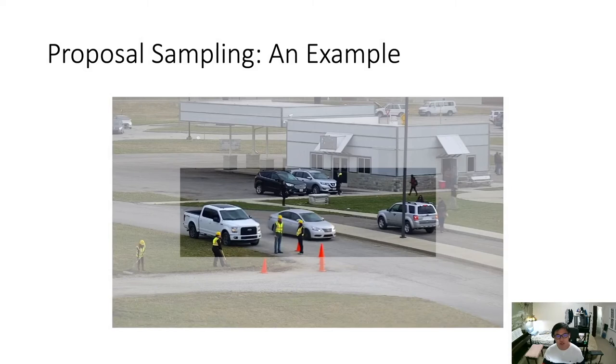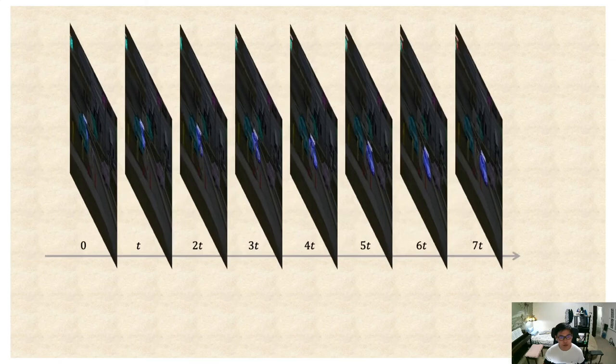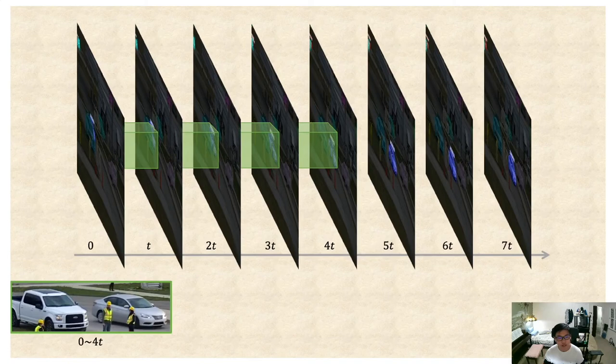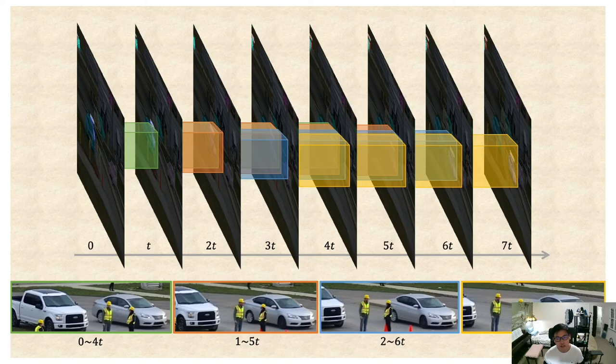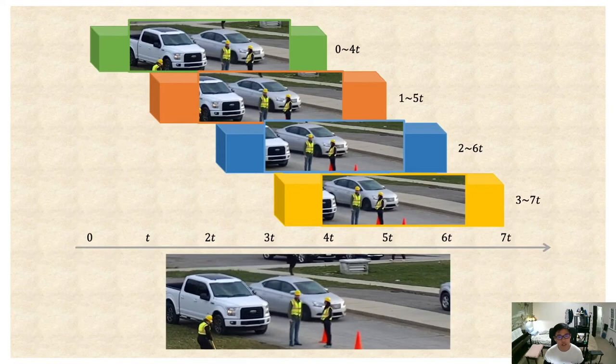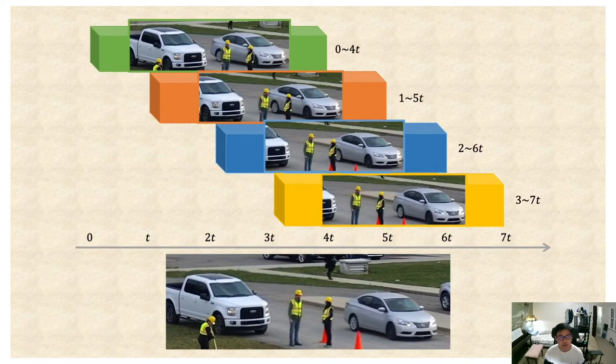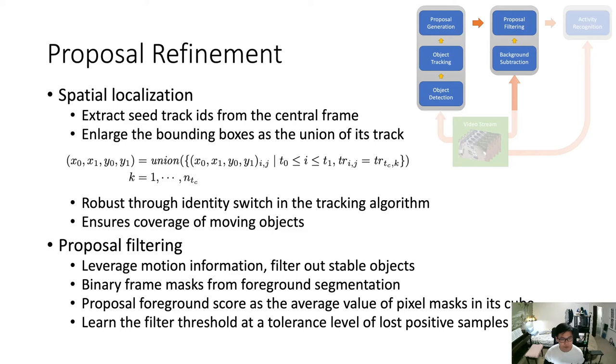Here is an example. We will generate proposals for this moving car. For overlapping proposals, we generate the first, second, third, and fourth proposals. You can see how they are temporally overlapped. In this way, you will never miss an activity instance occurring anywhere, because there are no boundaries.